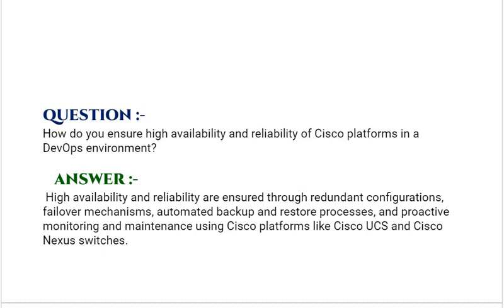How do you ensure high availability and reliability of Cisco platforms in a DevOps environment? Your answer should be: high availability and reliability are ensured through redundant configurations, failover mechanisms, automated backup and restore processes, and proactive monitoring and maintenance using Cisco platforms like Cisco UCS and Cisco Nexus switches.